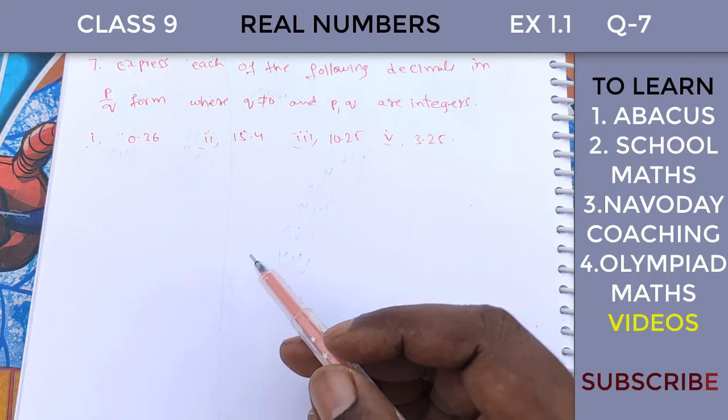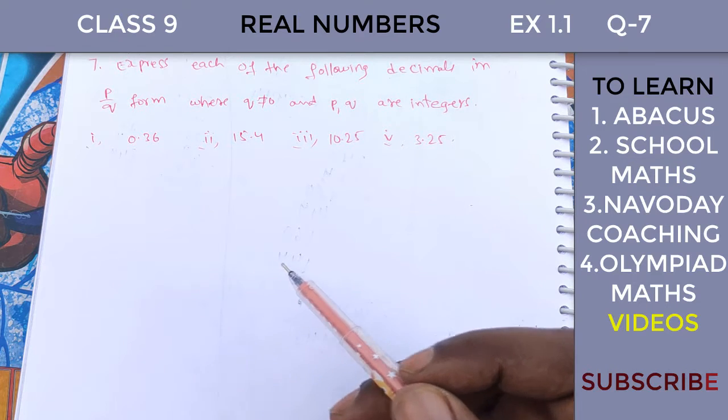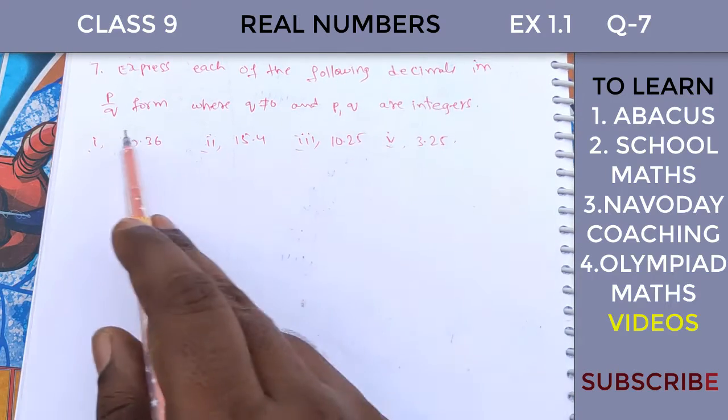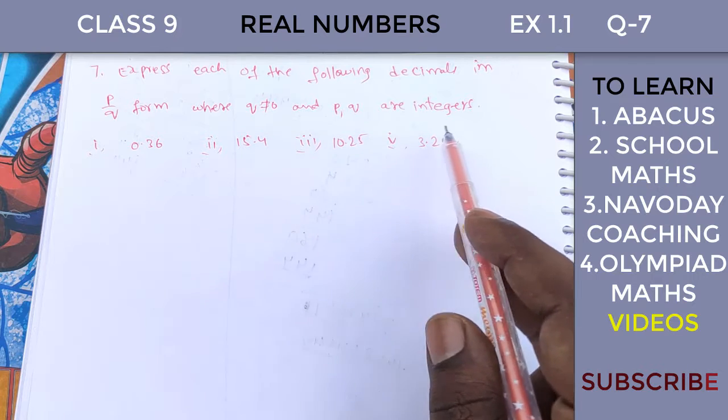Hi students, welcome to my channel. This is Exercise 1.1, Question 7. Express each of the following decimals in p by q form, where q is not equal to 0 and p, q are integers.